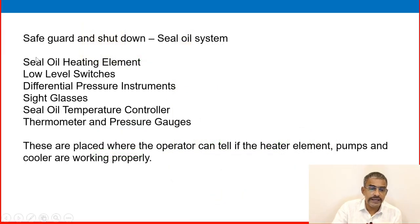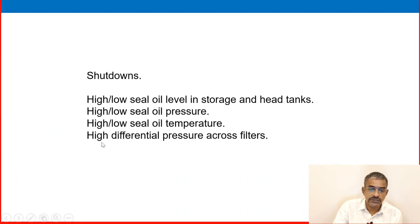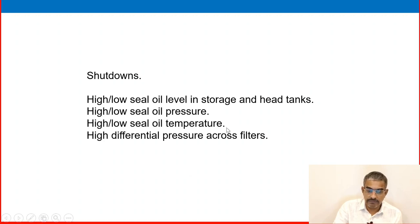Seal oil system shutdowns include: seal oil heating element failure, low level switches, differential pressure instruments, side glasses, seal oil temperature controller, thermometers, and pressure gauges to tell if the heater elements, pumps, and coolers are working properly. Shutdowns can occur on high and low seal oil level in the storage and head tank, high and low seal oil pressure, high and low seal oil temperature, and high differential pressure across the filter.